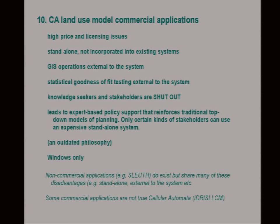What's the problem? There's a really good CA land use modelling system on the market called Metronamica. It's quite expensive, it's standalone, and if you want to do any GIS you've got to go outside and do it in a different system. If you want to do statistical goodness-of-fit testing, people who are just interested in finding out about these models are shut out — and so are stakeholders. The people you might want to work with in land planning — farmers or municipal authorities — find it very difficult to access this model. You have to buy it as part of your project and give them results. This is a 1990s idea that experts come along, do policy support, roll out information, and planners implement it. I think this is an outdated philosophy.